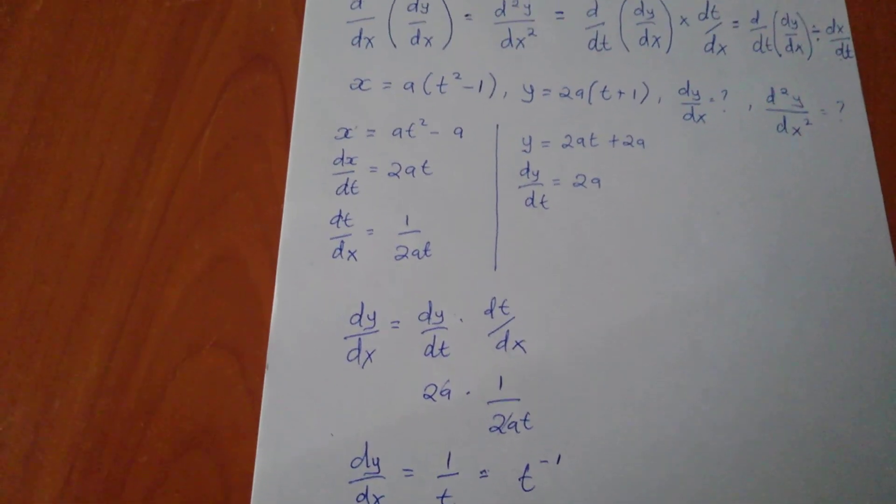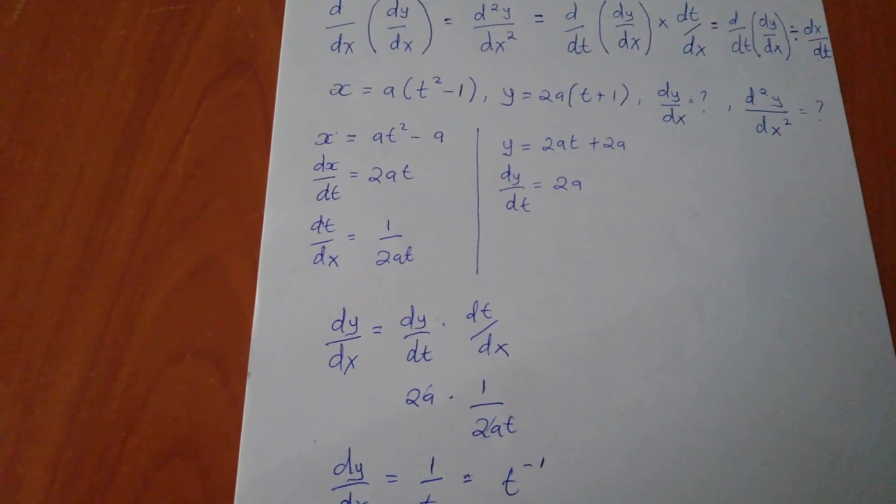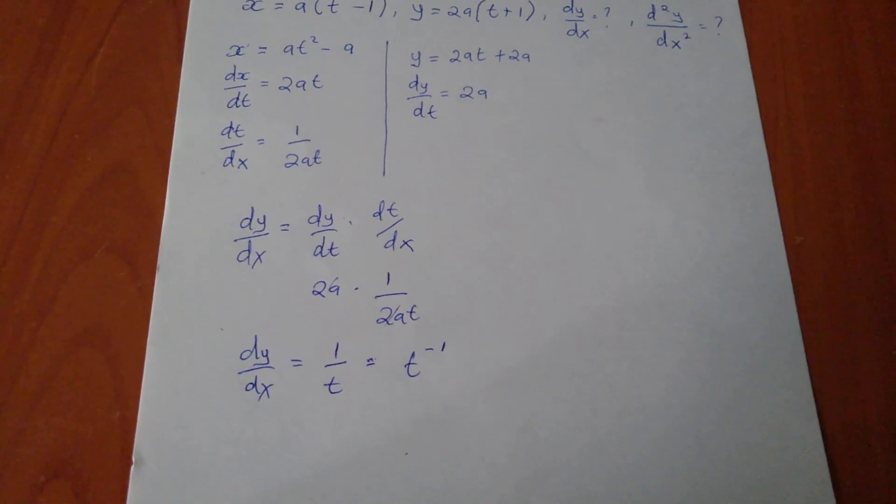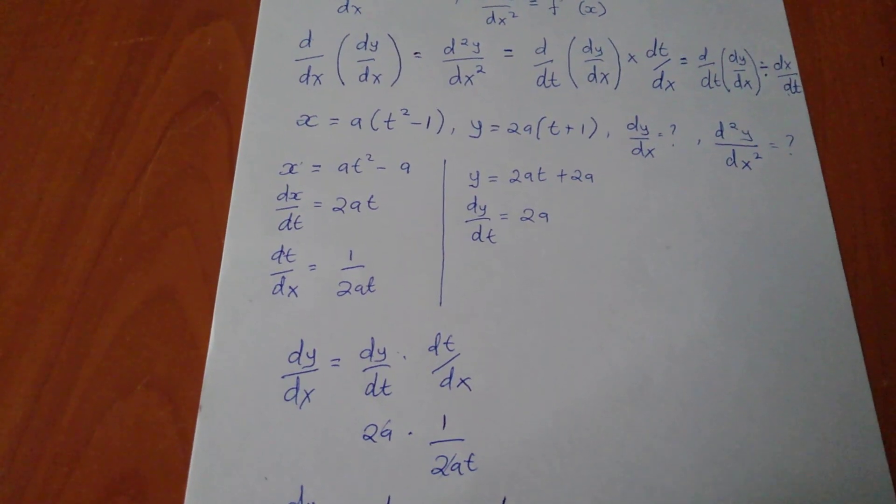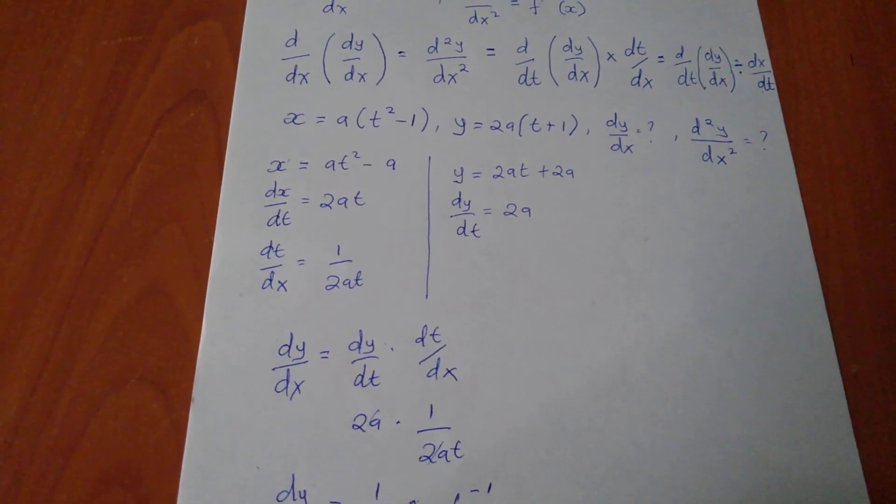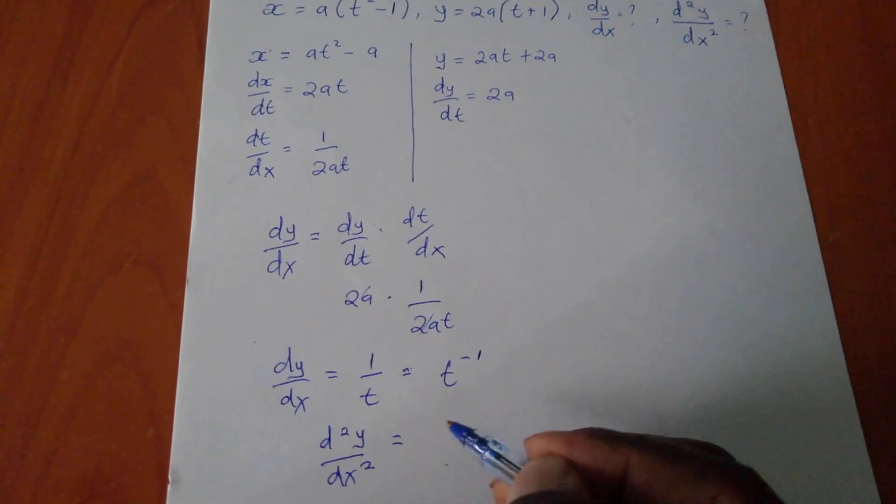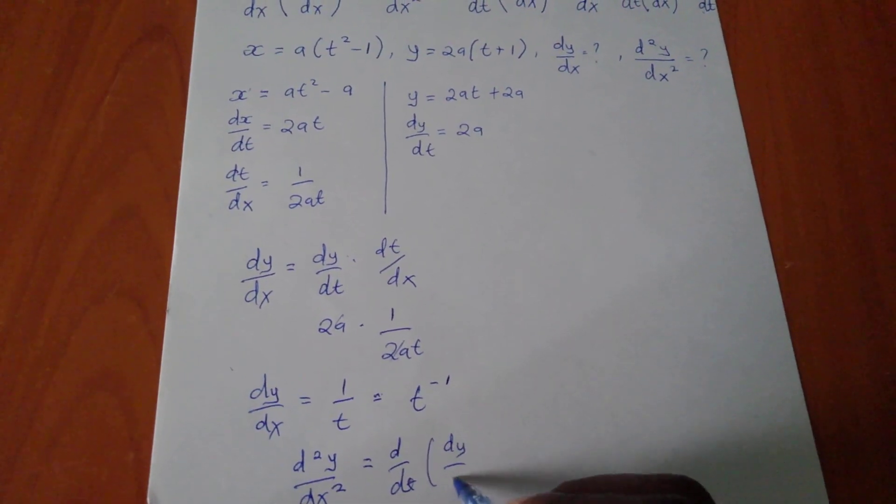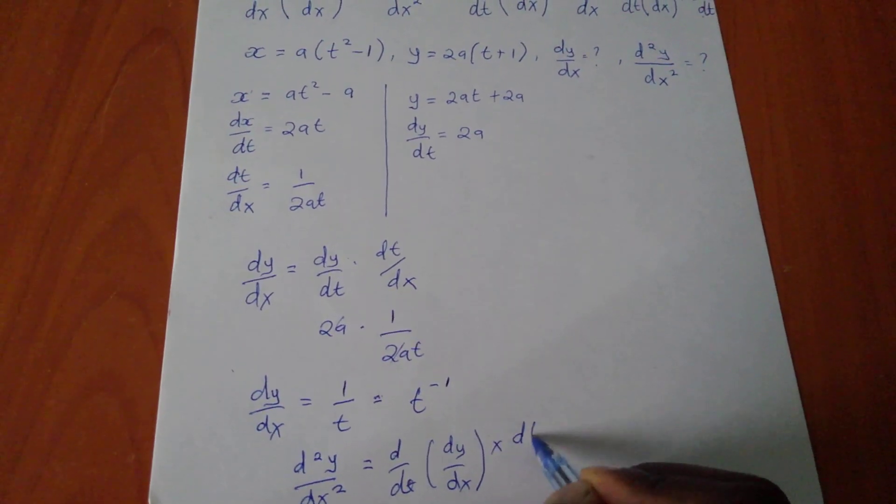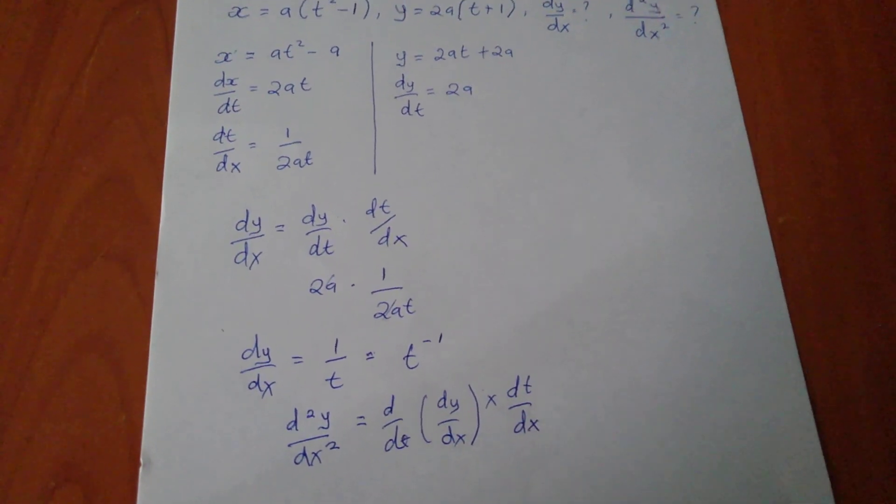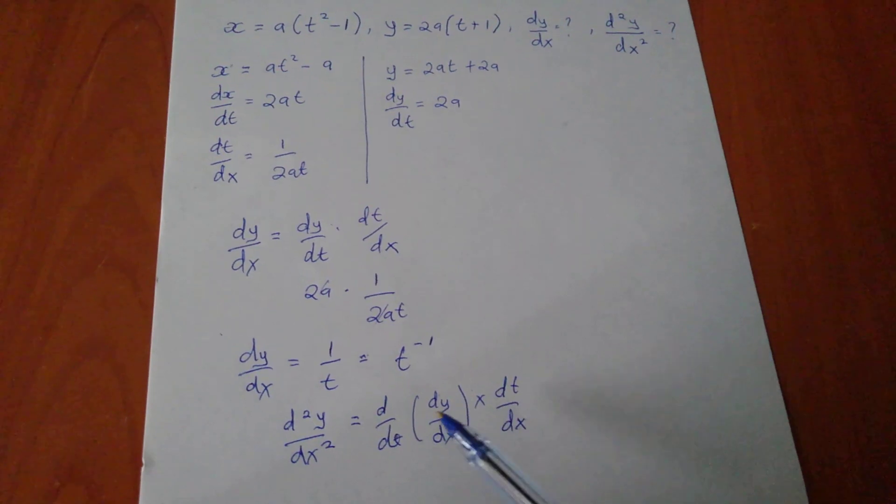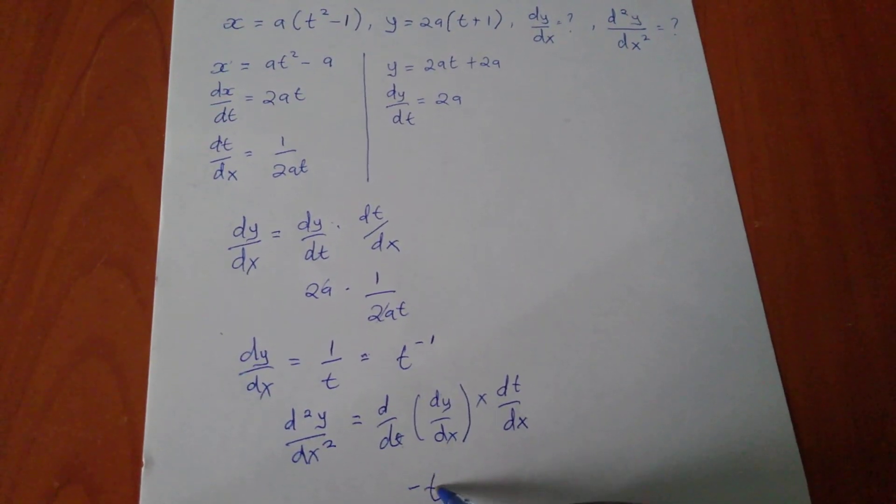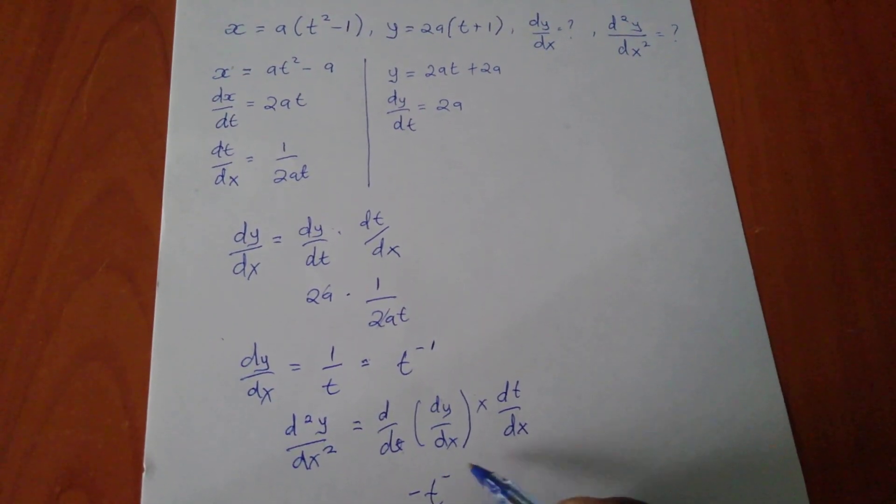But all they want is the second derivative, d²y/dx². So using the formula, I'm not going to stress myself. So if I go on to differentiate, d²y/dx² which is equal to, I'm using now the formula, d/dt of (dy/dx) times dt/dx. So if I go on to differentiate my dy/dx with respect to t, this one, I'm going to be able to get negative 1, t to power negative 2.